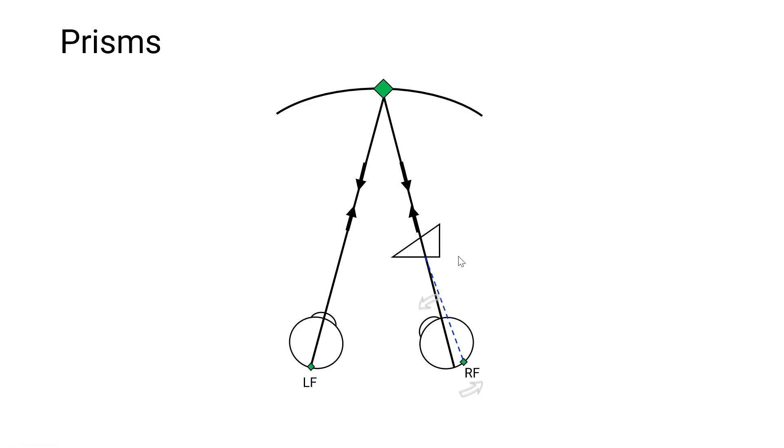If you want to think about it in degrees, degrees are about half of the prism diopters. So 10 prism diopters means a 5 degree movement. So this inward movement is called fusional convergence.